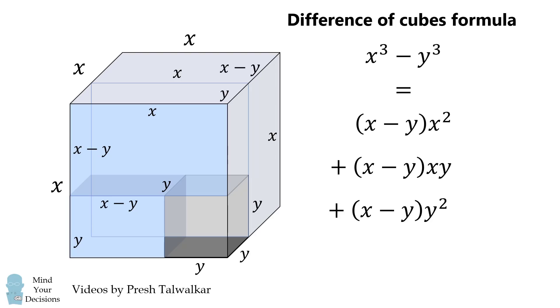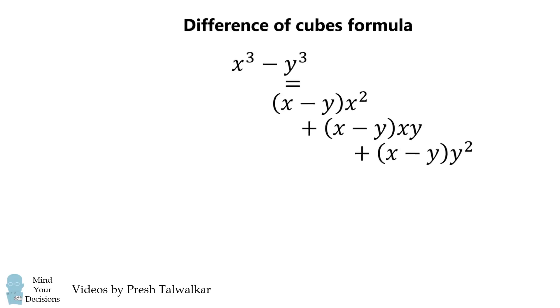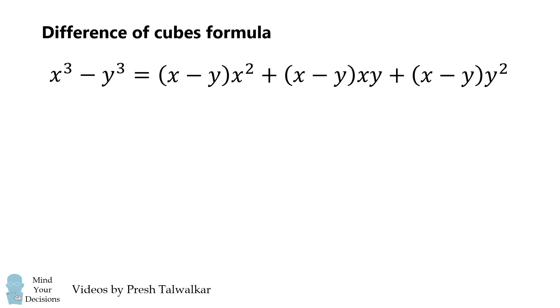We've now figured out two ways of expressing the same volume. Notice that each of the terms has a factor of x minus y. We can factor this out and we end up with the following formula.